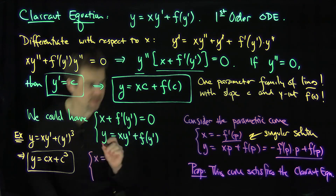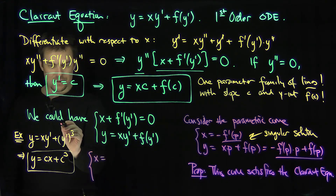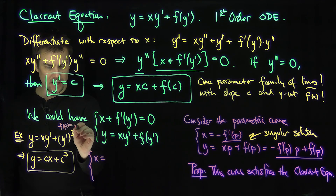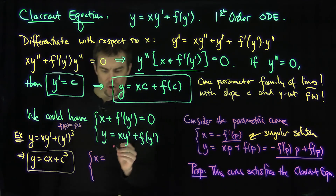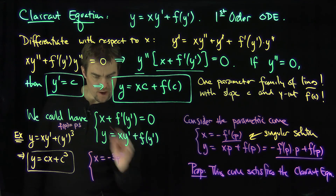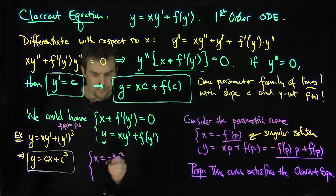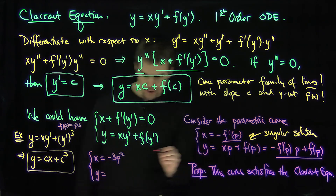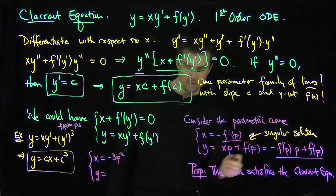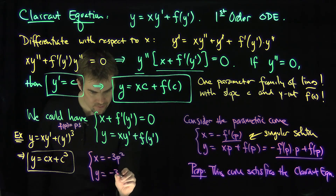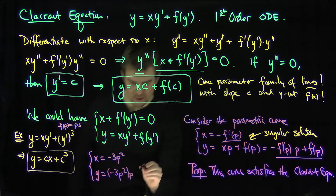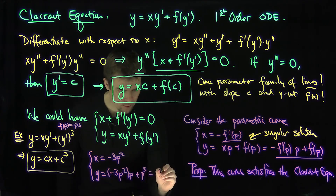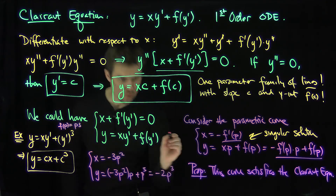The singular solution parametric curve is: x equals negative f' of p, and since f of p equals p^3, f' of p equals 3p^2, so x equals negative 3p^2. Then y equals negative f' of p times p plus f of p, which is negative 3p^2 times p plus p^3, and this simplifies to negative 2p^3.